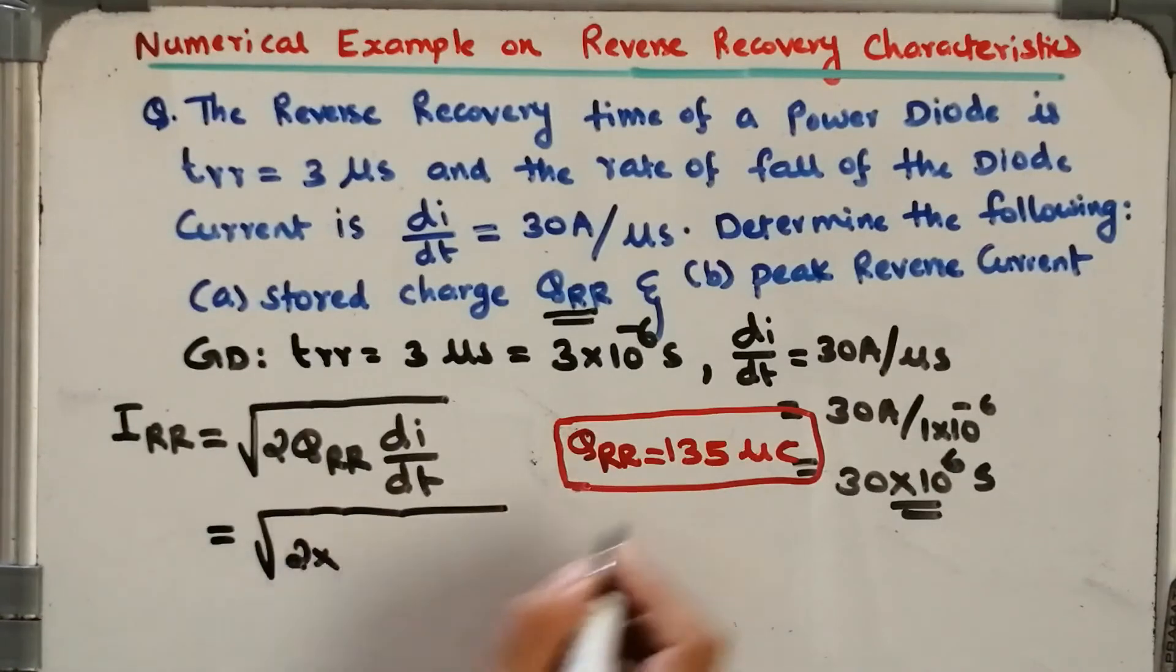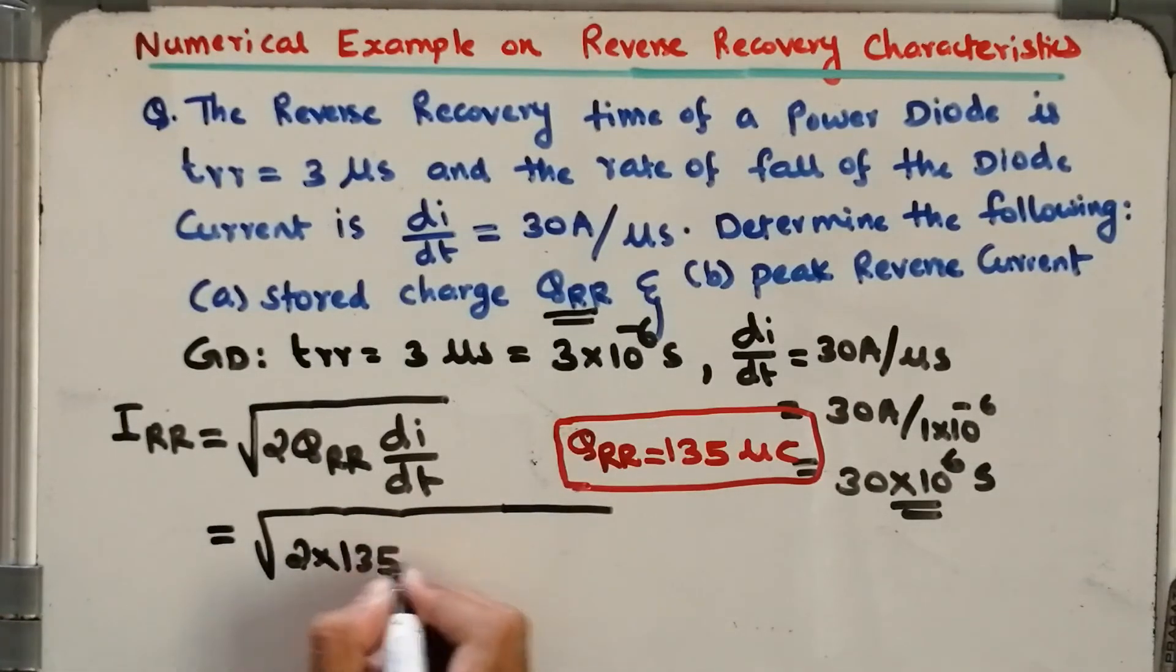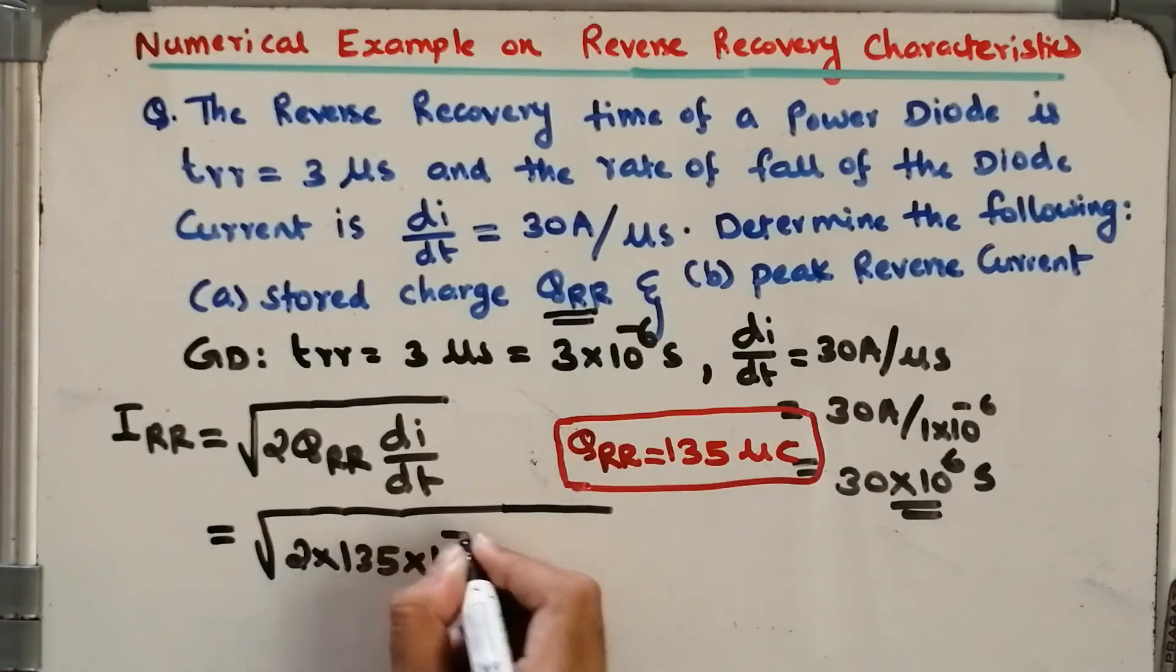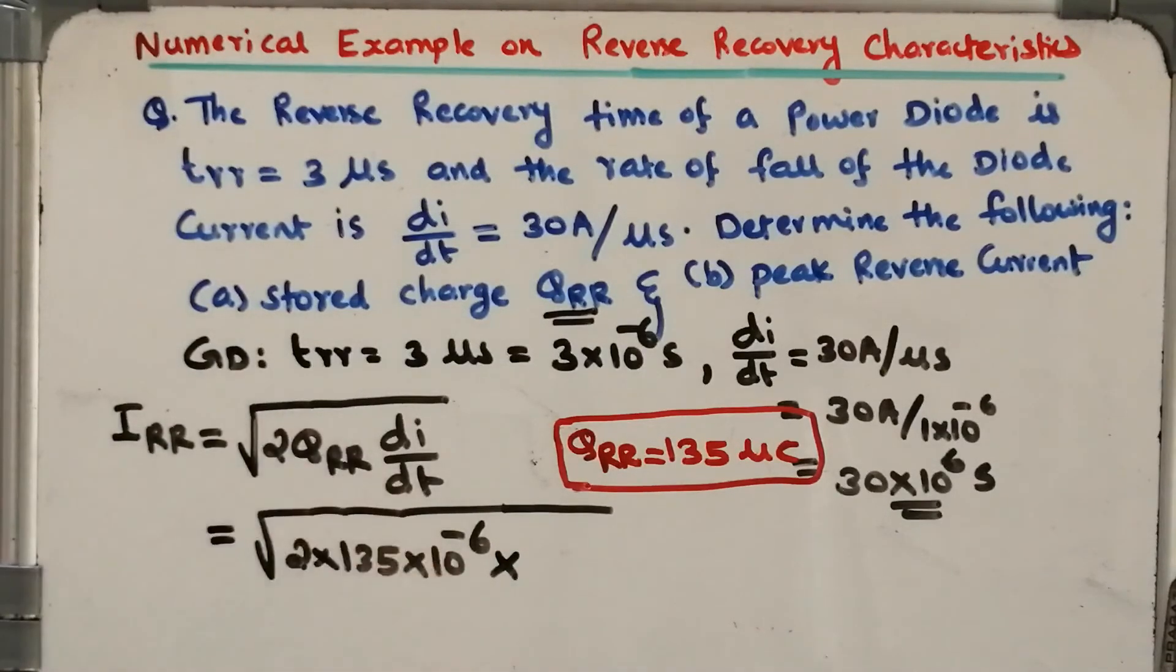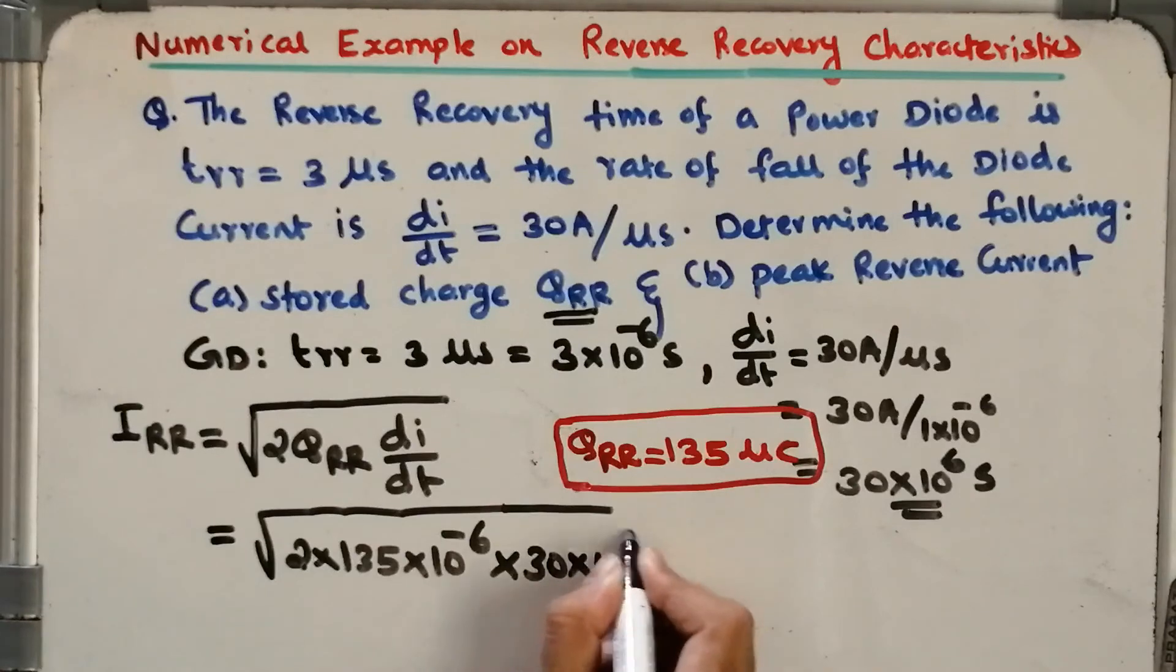All the values are available right now. 2 times QRR, which is 135 microcoulomb, so 135 times 10 to the power minus 6 coulomb, times dI/dt, which equals 30 times 10 to the power 6. So please substitute and let me know the answer.